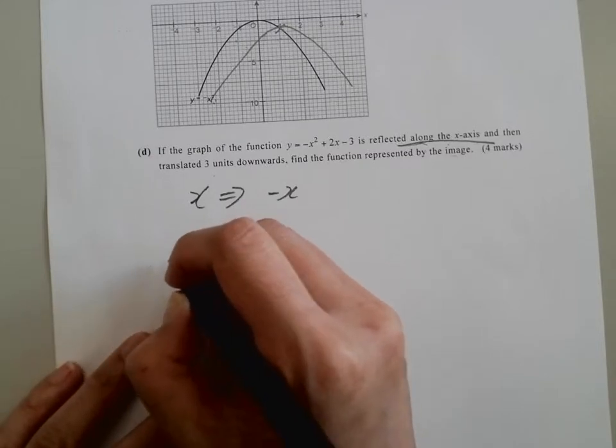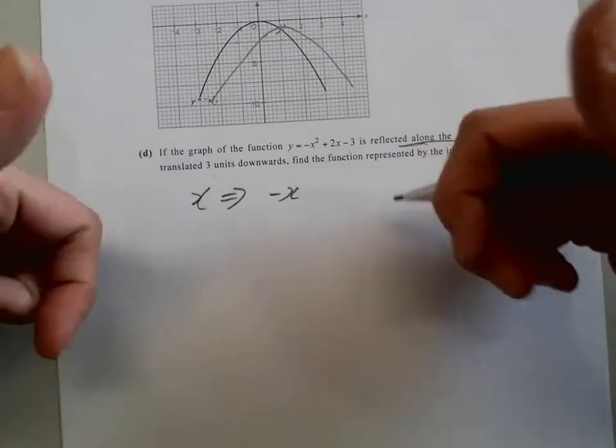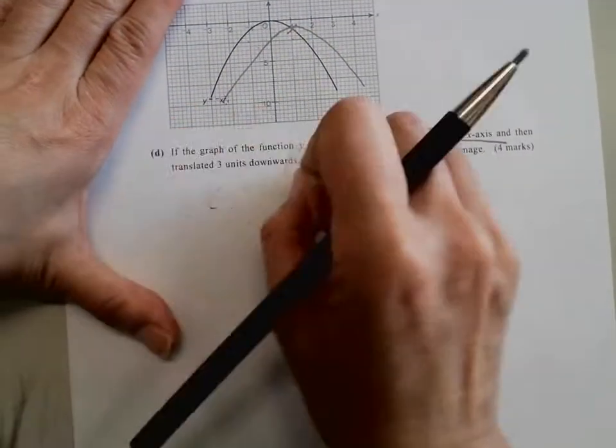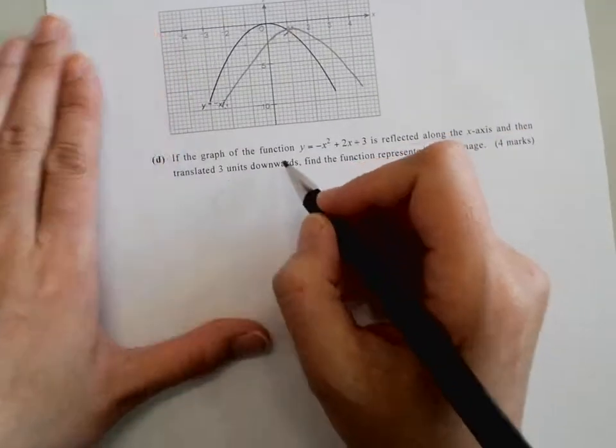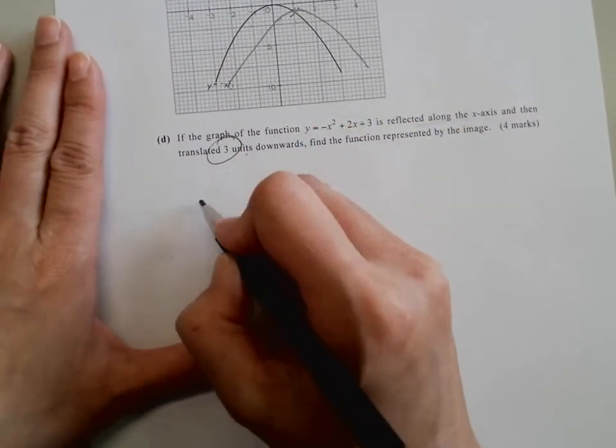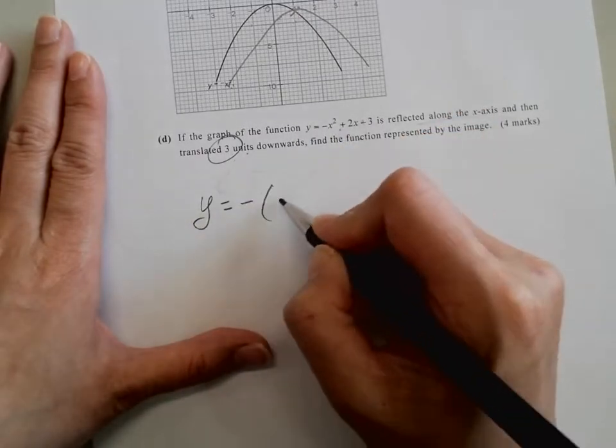No, reflect along the x-axis is all the y become negative y, so we give a negative outside there. And then three units downwards. So what we're going to do is y equals to reflect that along.